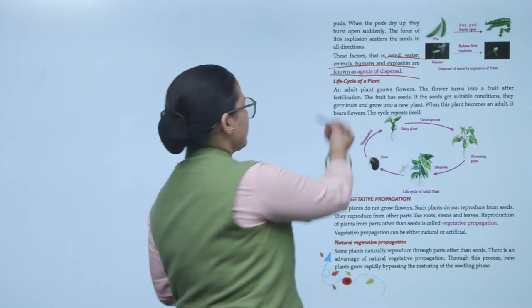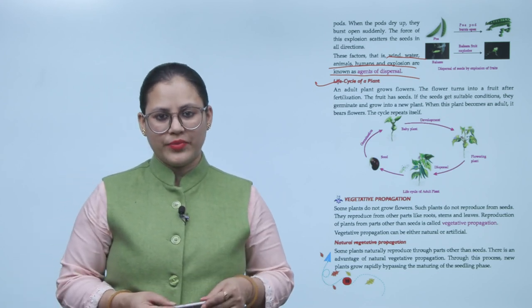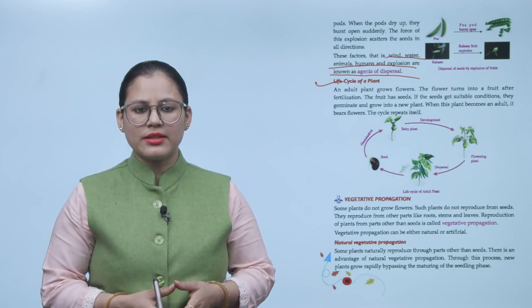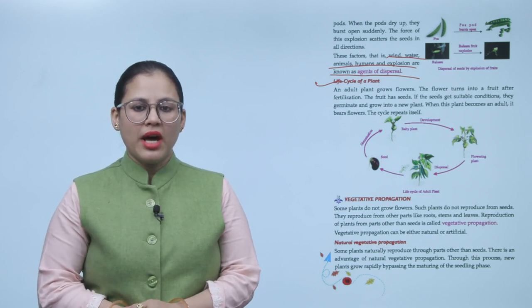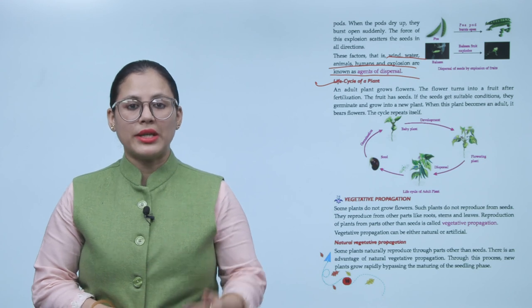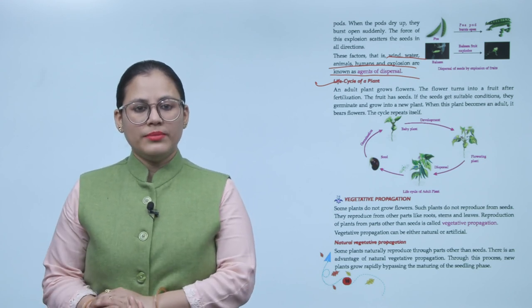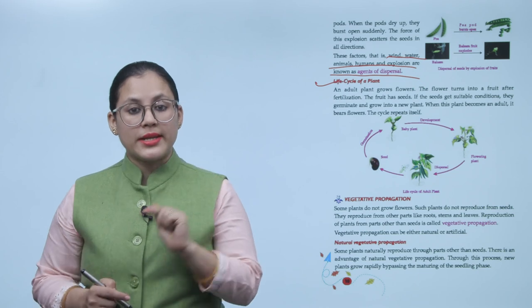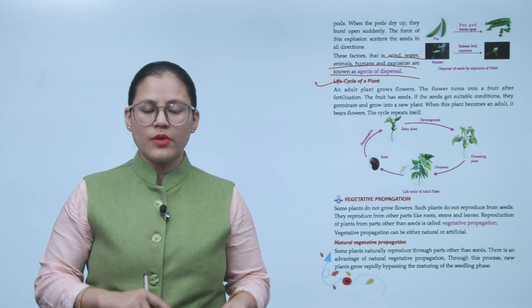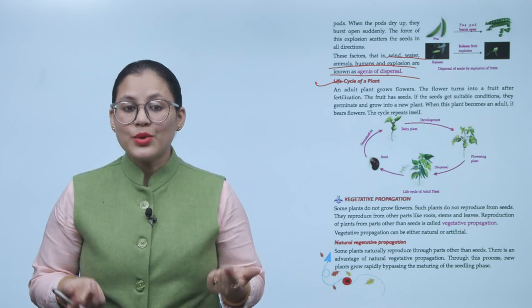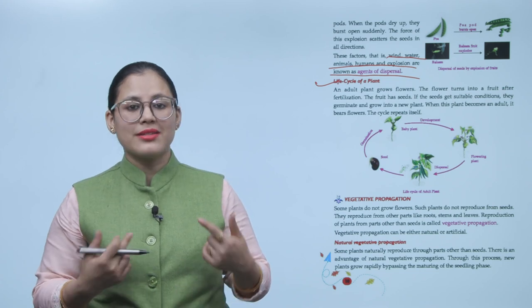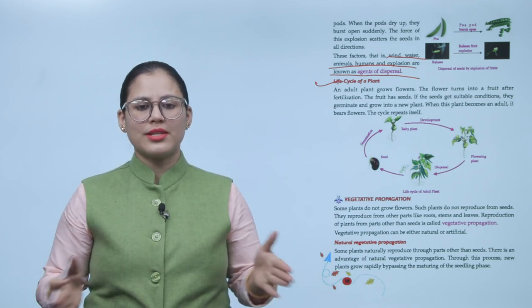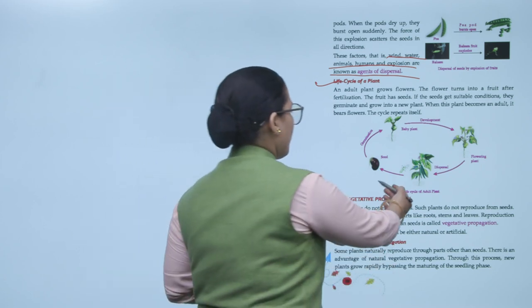Life cycle of a plant. An adult plant grows flowers. The flower turns into a fruit after fertilization. The fruit has seeds. If the seeds get suitable conditions, they germinate and grow into a new plant. When this plant becomes an adult, it bears flowers. The cycle repeats itself. This is the life cycle of an adult plant.